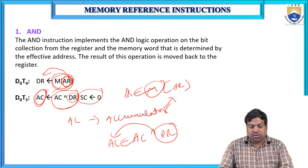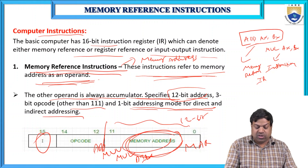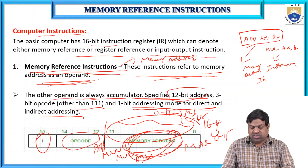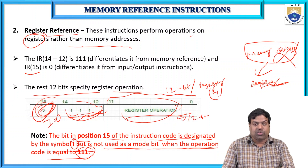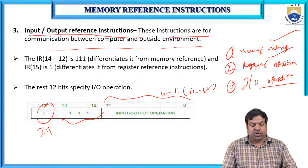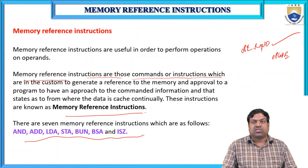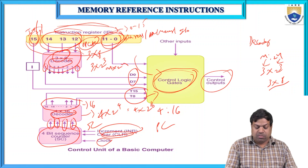In summary: memory reference instructions use bits 0–11 as memory address, bits 12–14 as opcode, and bit 15 as i = 0 or 1. Register reference uses bits 0–11 for register operation, opcode 111, i = 0. Input-output uses bits 0–11 for I/O operation, opcode 111, i = 1. The seven memory reference instructions are: AND, ADD, LDA, STA, BUN, BSA, and ISZ — and these form the control bus of a basic computer unit.